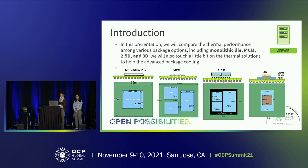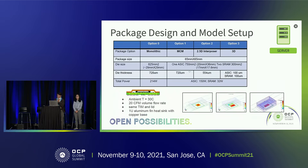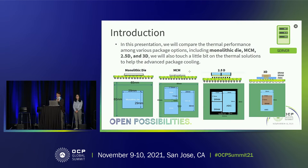One of our priorities and focus is chip-led modules. When we design chip-led modules, the first question is: how are we going to design it? For a chip-led module, we can have different configurations — are we going to use the monolithic die, MCM, 2.5D, or even 3D stack-up structures? In order to select the best options, we do a case study and simulation, considering the electrical, thermal, and manufacturing aspects. For today's presentation, we will focus on thermal, using MCM and 2.5D as the baseline.